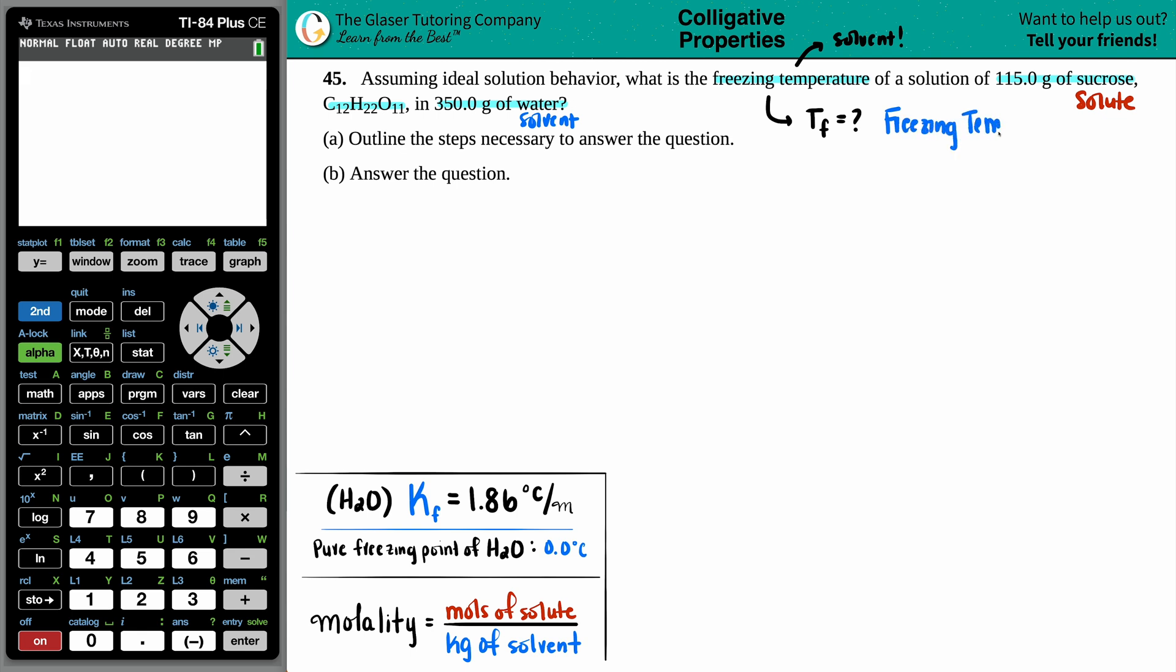that a freezing temperature will always depress, they call it. It's a freezing point depression. And when you're depressing something, you're bringing it down. So freezing temperatures will always go lower than the actual pure freezing temperature. It will never ever go higher.